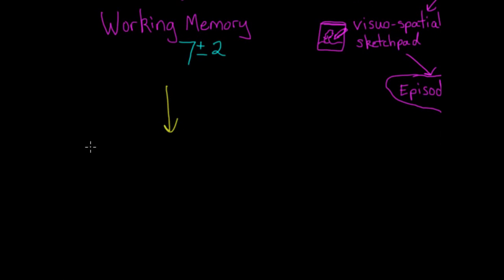Long-term memory is the final stage in the information processing model. When stuff gets in here, it's like hitting the save button on your computer. Unfortunately, our memories aren't quite as foolproof as that. It doesn't work perfectly. But we can store a lot of information in long-term memory. Once again, there are different components that specialize in different types of memories. We have two main categories: explicit, also called declarative, and implicit, also called non-declarative.